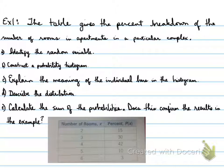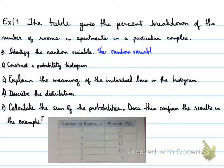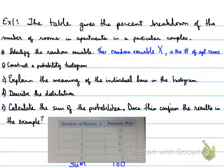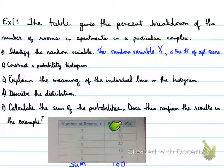Here we have the number of rooms: 2, 3, 4, 5, 6, and the percent P(x) is 15, 30, 42, 10, and 3. So the random variable is the number of rooms. The probability percent should sum to 100%, since this includes all of the values.